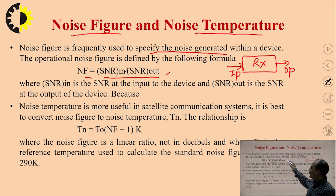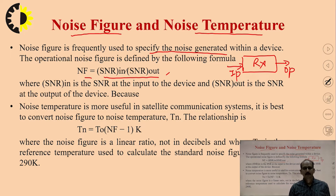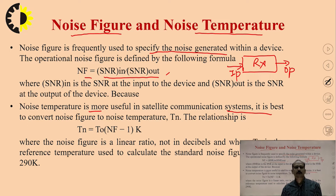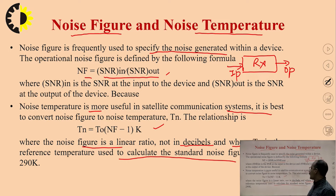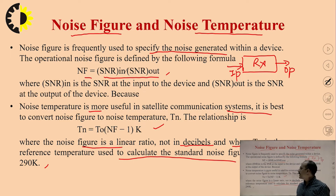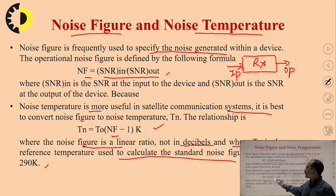The noise figure is related to the noise temperature we already derived. Noise temperature is more useful in satellite communication systems. It is best to convert noise figure to noise temperature TN, and that relationship is: TN = T0 × (NF − 1) Kelvin, where the noise figure is a linear ratio (not in decibels) and T0 is the reference temperature, usually 290 Kelvin. This formula is quite important because in your examination — AKTU 2-marks questions — you may be given the NF value and T0 value and asked to find the system noise temperature TN.